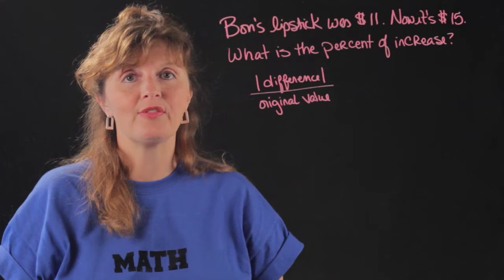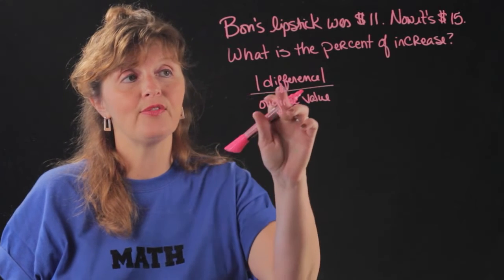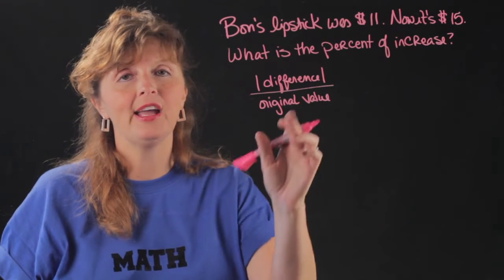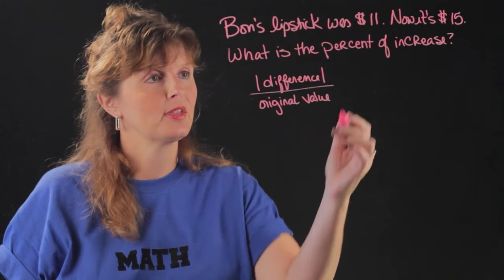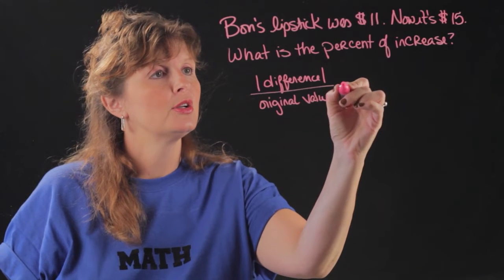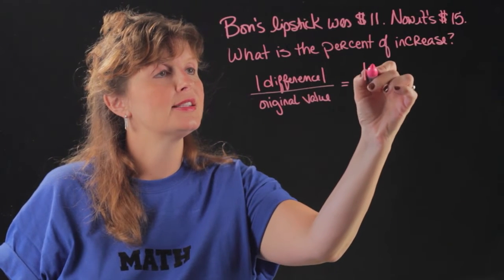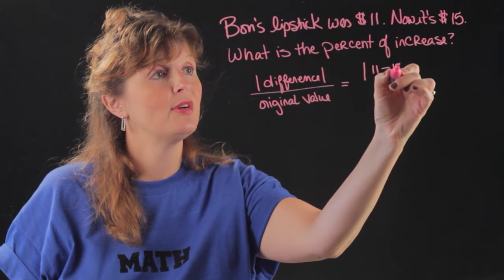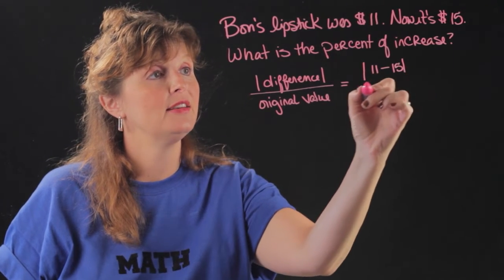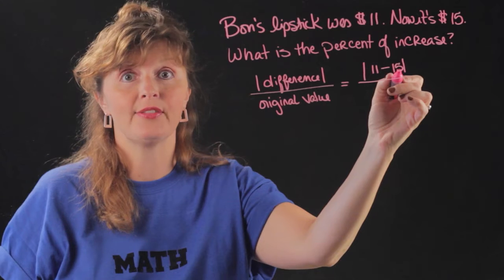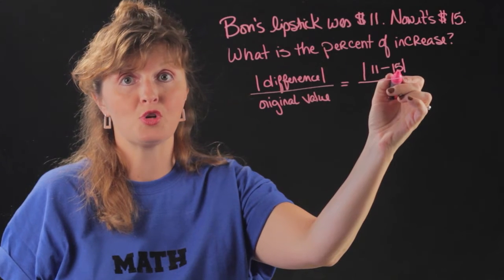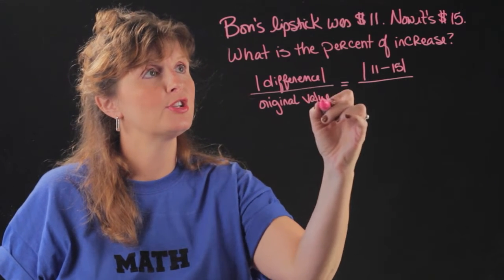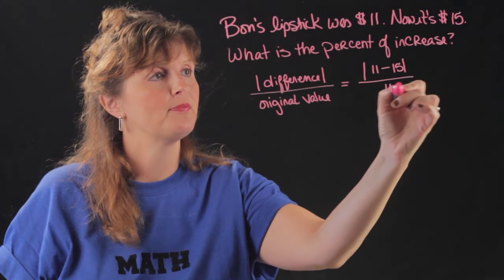The way we do this is we find the absolute value of the difference in the two numbers and divide it by the original value. So what we have is it was $11, now it's $15, so we do that difference — which is a subtraction problem — and divide it by the original number, which is 11.